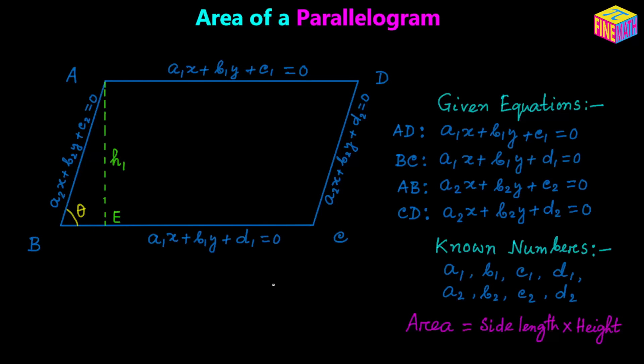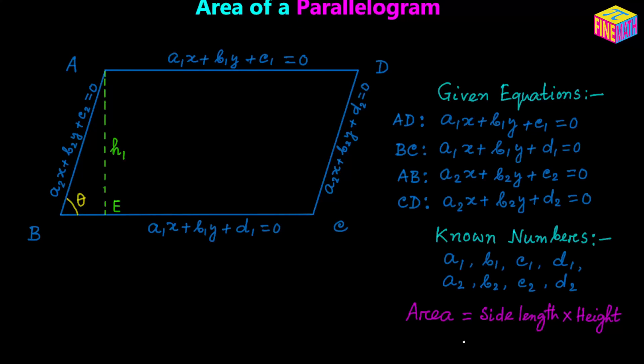So in this diagram, if we consider side BC, then we can say the area of this parallelogram would be equal to the length of BC multiplied by the height from BC up to its parallel line AD. In the diagram I have denoted the height as H₁, which is the length of AE. So if that is the height and we consider the side length BC, then the area will be equal to BC times H₁.